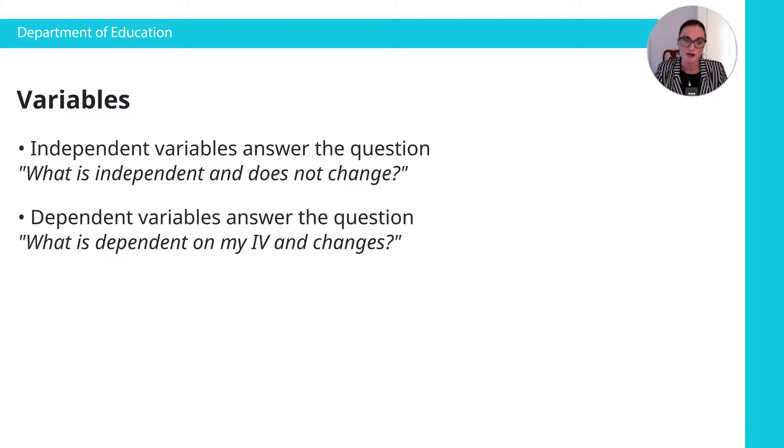A dependent variable answers the question, what is dependent on the independent variable? So what changes according to the independent variable? What's changing in our study when we're looking at the science learning outcomes is the science score on the test. That's changing depending on the gender, depending on the student. So that's our dependent variable.